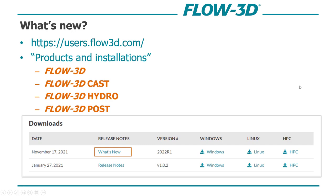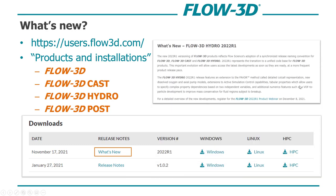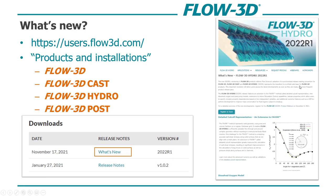There are What's New release notes available on the website with all these products. The What's New is product specific — one for Flow3D, one for Cast, one for Hydro, etc. It includes a general paragraph followed by detail of all the new features included in each release. Today I'll talk about everything together, and if you want to see what's in which specific product, you can easily find that on the user site.